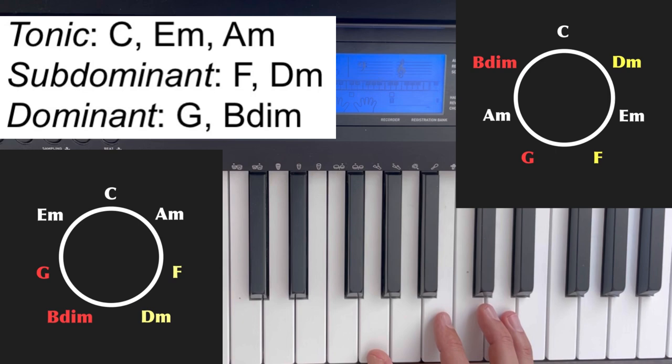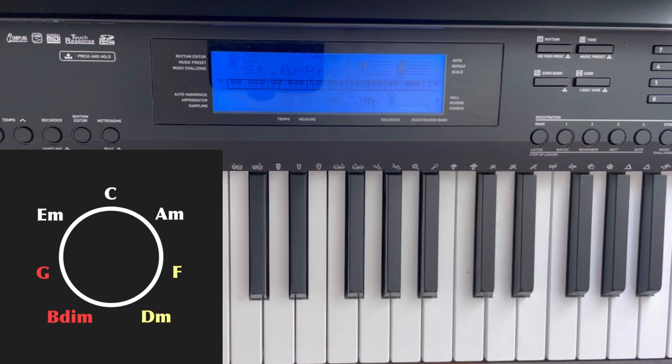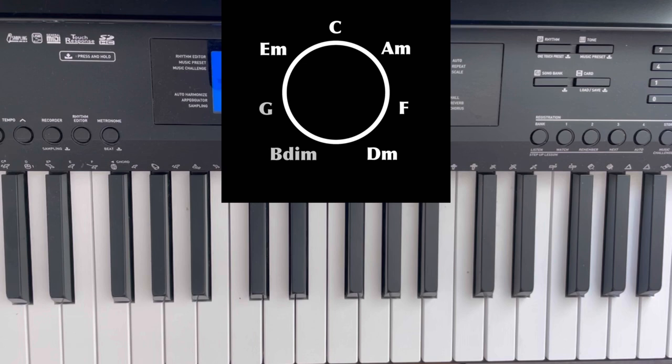If you keep on going in the same kind of way, you end up with this new plot where now the C and A minor and E minor, which were these tonics, are all clustered upwards. Whereas the F and the D minor, which are the subdominants, are all clustering kind of in their direction and the G and the B diminished are clustering in their direction. By doing it like this and seeing it in this space, we don't really even need to think about tonics, subdominants and dominants anymore because they wear their similarity on their sleeve in this space. You can just see they're close to each other.